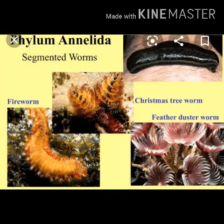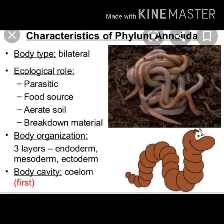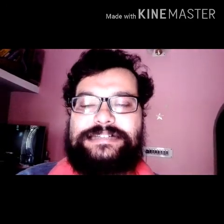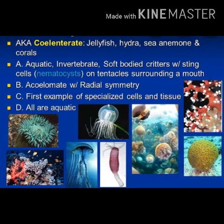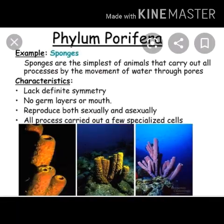In Class 9 biology, we will study different invertebrate phyla. We will start with Porifera, then Cnidaria, Platyhelminthes, Nematoda, and Annelida. We will also see the importance of earthworms and the structure of earthworms. So today we will start with the different invertebrate phyla.